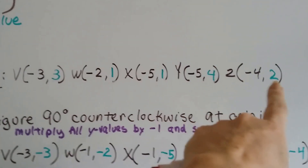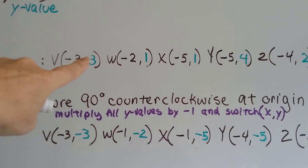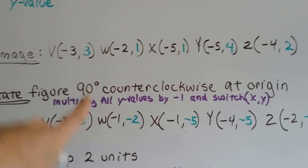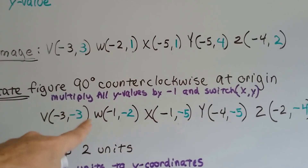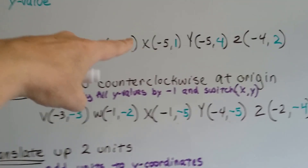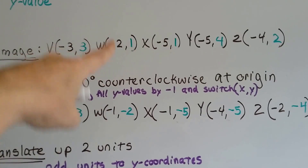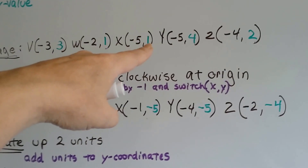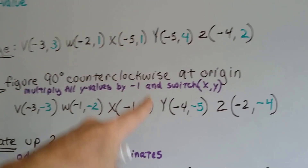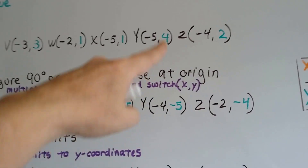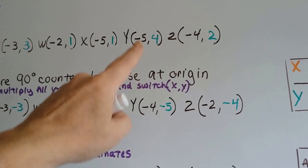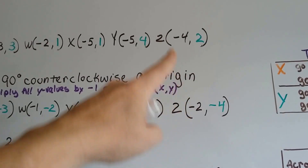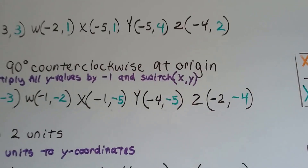The green ones are the y-values; we need to multiply them by negative one. Three times negative one is negative three. One times negative one is negative one — see how they flipped? These are both negative three. One times negative one is negative one, and we put the two here — that's the new y-value because they switched places. Four times negative one is negative four, then the x dropped down into the y's position. Two times negative one is negative two, and the negative four dropped down into the y's place.